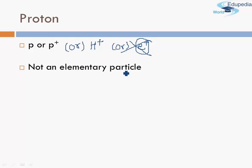The proton is not an elementary particle. Elementary particles are those which cannot be divided further. While electrons cannot be further divided by the science we know today, protons can actually be divided — they are formed by three quarks, each carrying a charge of approximately e/3. So remember: the proton is not elementary.